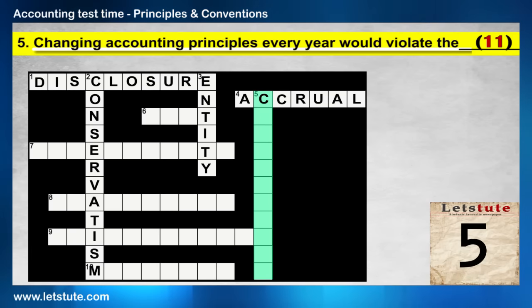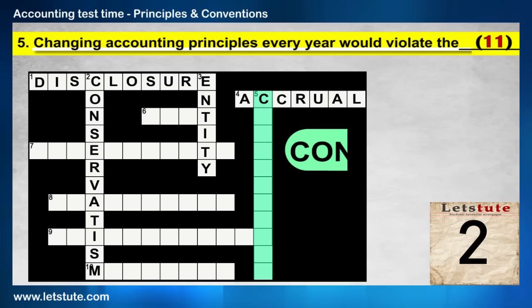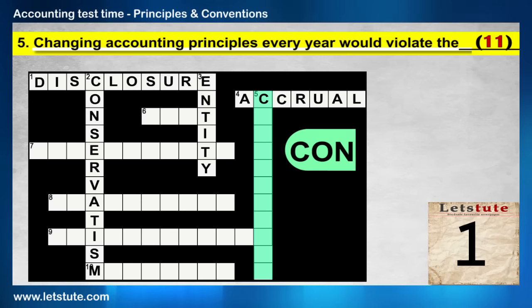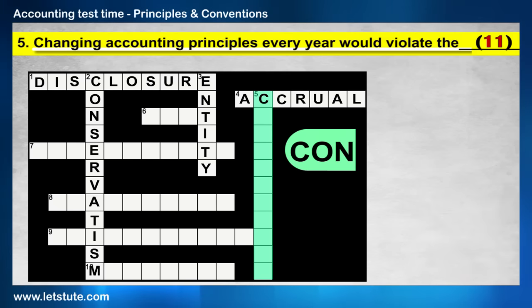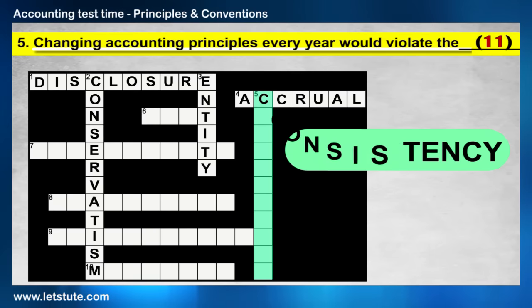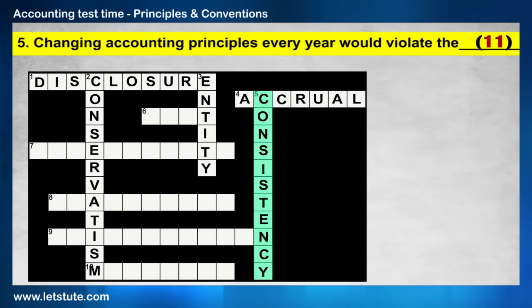The fifth one is down: Changing accounting principles every year would violate which convention? The first three letters are C-O-N. You can guess the other letters. Yes — the consistency convention. It says that every business should be consistent.